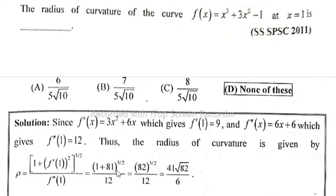divided by f''(1). f'(1) equals 9, so 9² equals 81. 1 plus 81 to the power 3/2 divided by 12 equals 82^(3/2) divided by 12, which equals 41√82 divided by